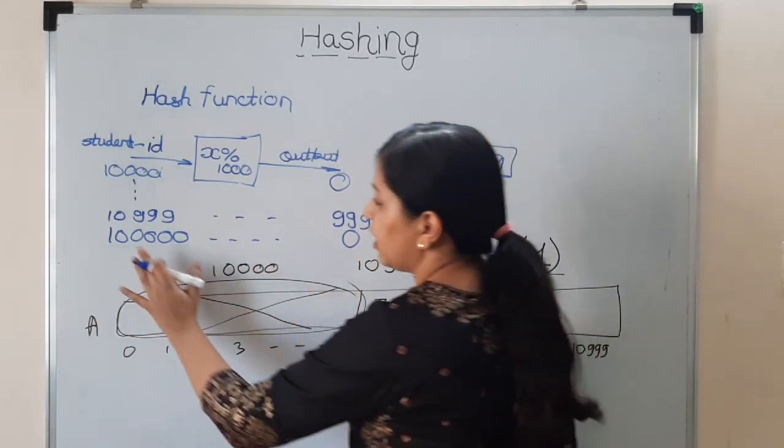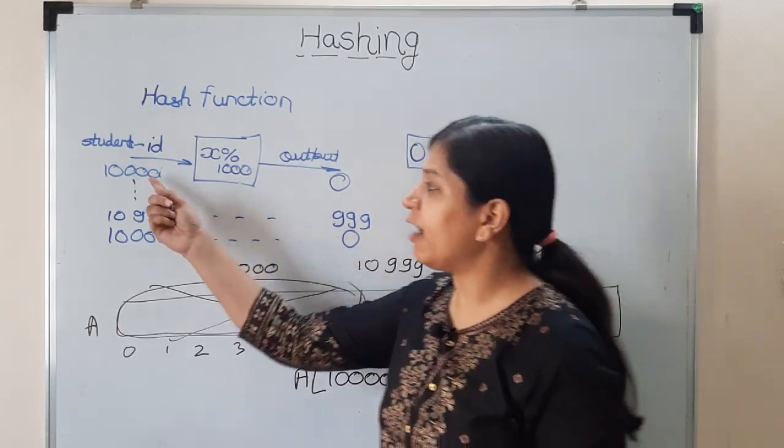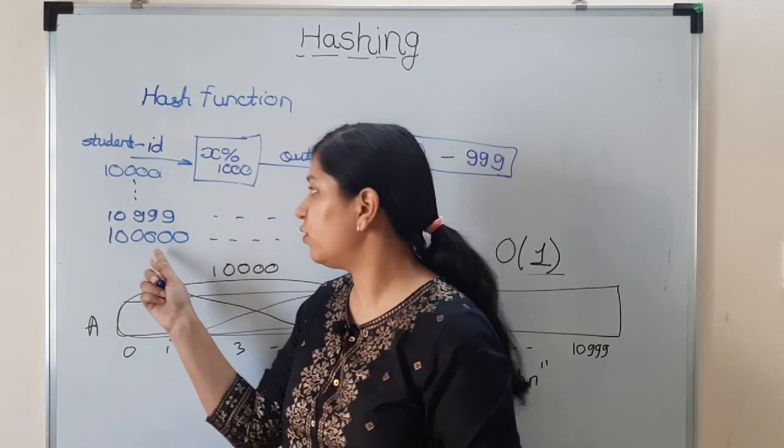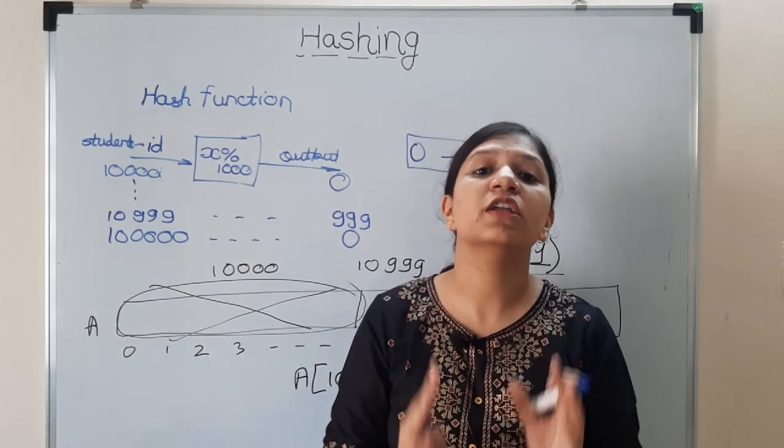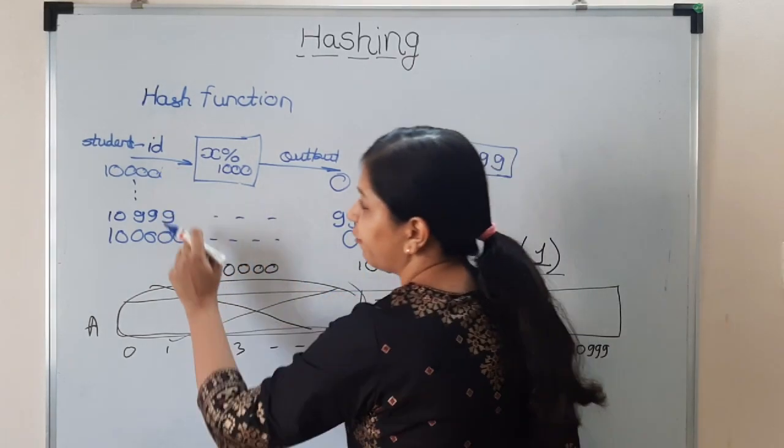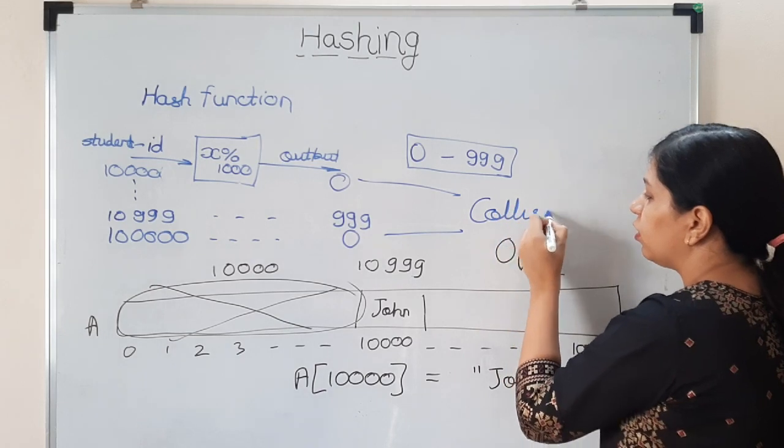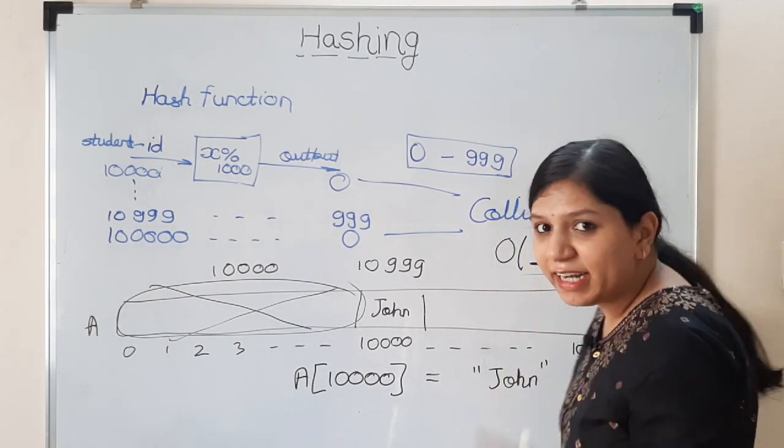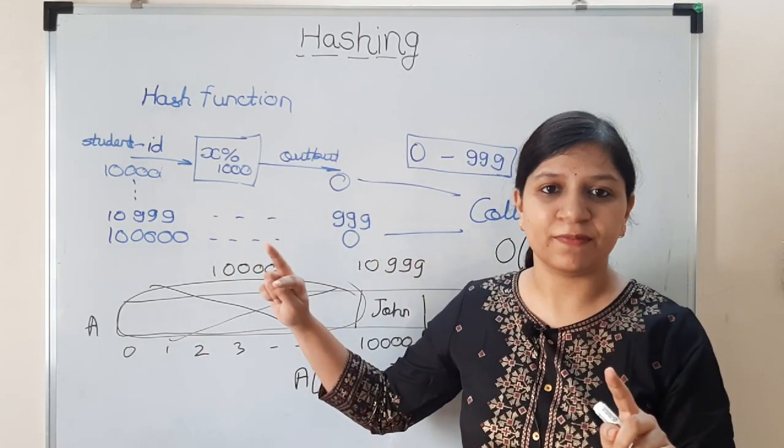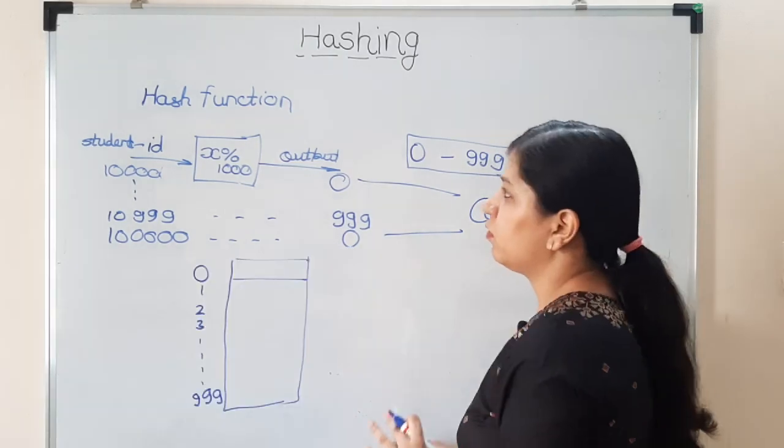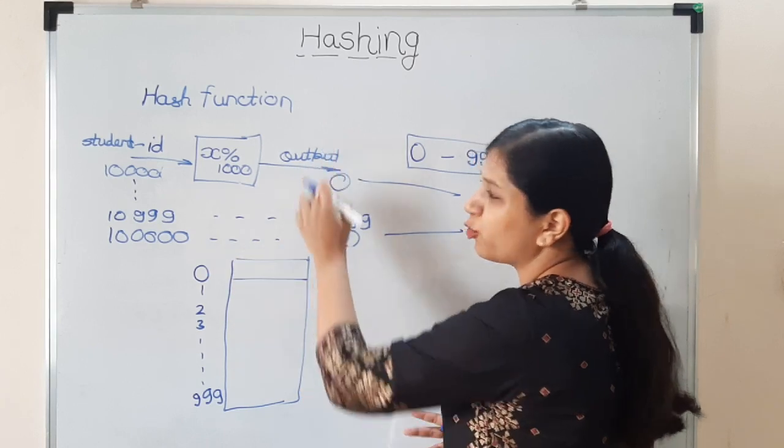One problem you must have been thinking: see, in case of 10,000 you were getting the output as 0. In case of one lakh also you were getting the output as 0. So the student having the roll number 10,000 and the student having the roll number one lakh - this data is going to collide. This is called collision. When we give different IDs and we get the same output, this is called collision. Now we need to place both the data at index 0, right? For one key there are two values.